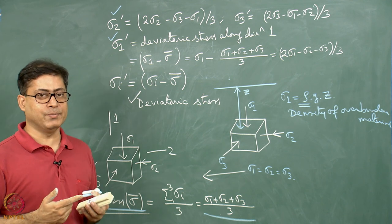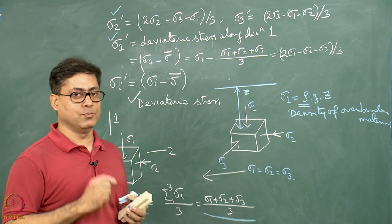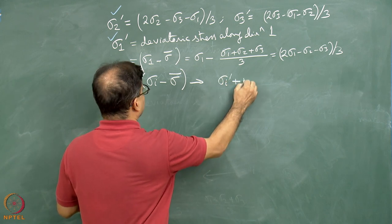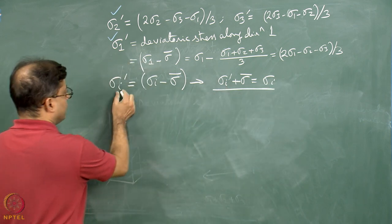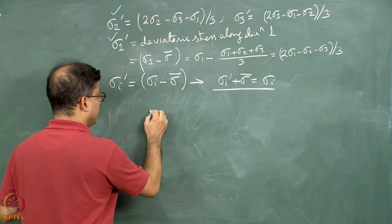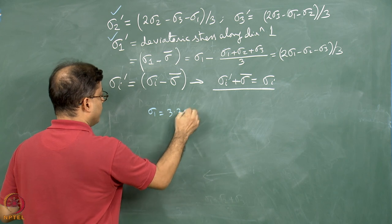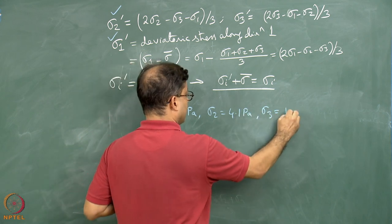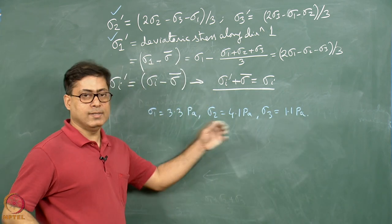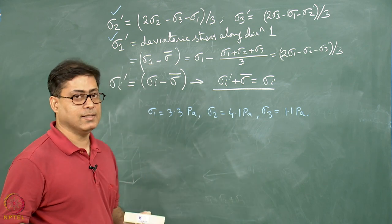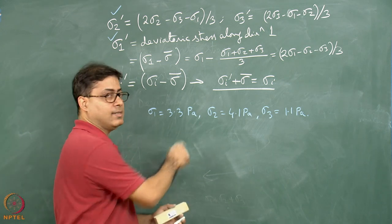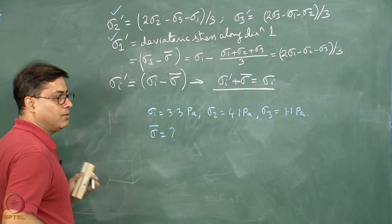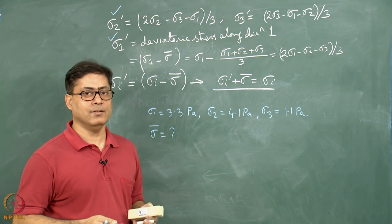Students need to remember the formula for mean stress and hydrostatic stress. Also note: sigma-i prime plus sigma-bar equals sigma-i. Now, here is a problem: suppose along three directions I give some applied stress values — positive values mean compression, negative values mean extensional stress — and these are all normal stresses acting on mutually perpendicular planes. The problem is: how much is the mean stress? I request you to do the arithmetic mean, stop the video, and then we can proceed.